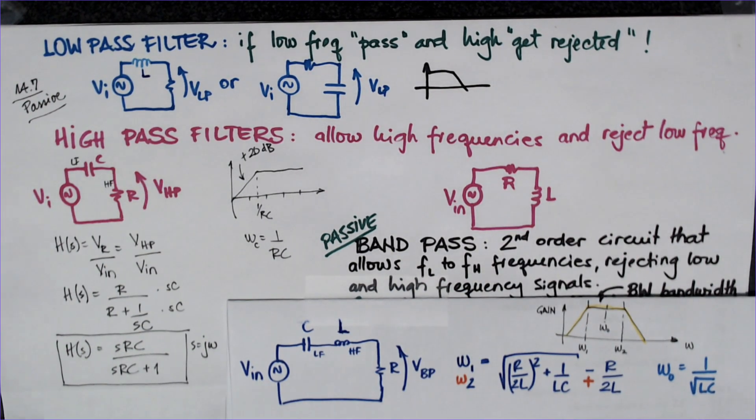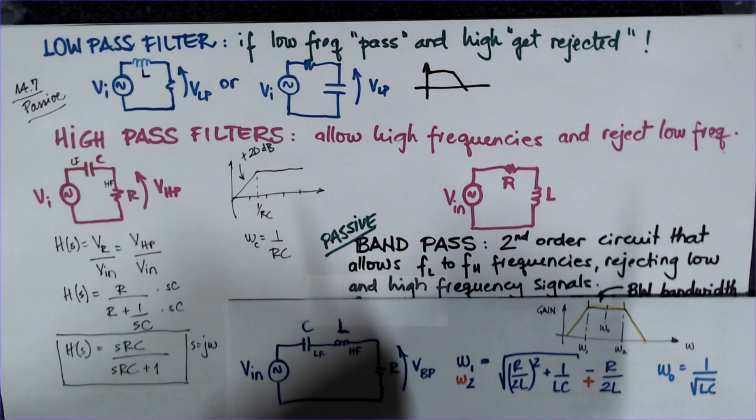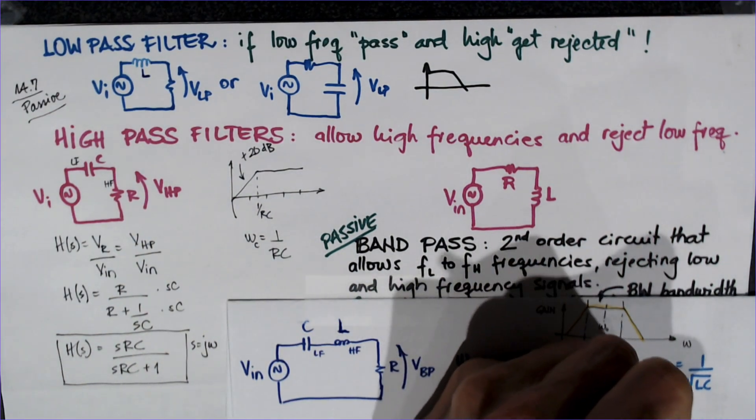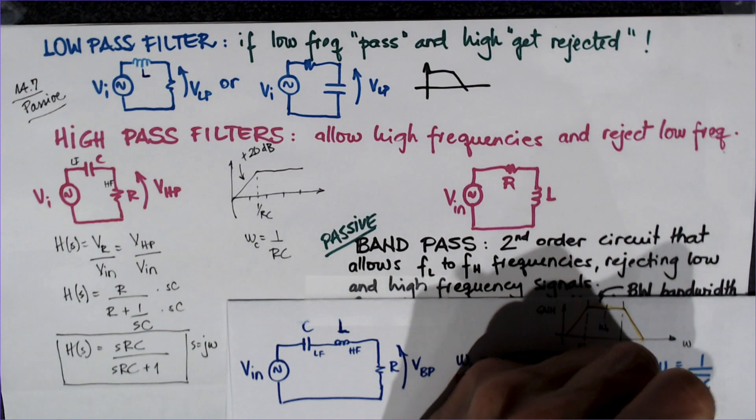These are also radians per second. I think in the previous video I made a mistake—I wrote FL and FH as just 1 over RC, but really those are Omega L and Omega H. For F, I would have to say that it's divided by 2 pi, because Omega is obviously always 2 pi F.